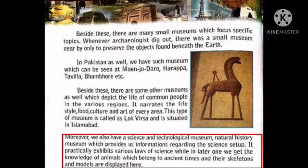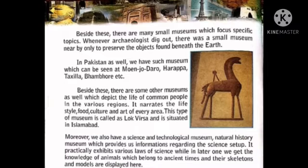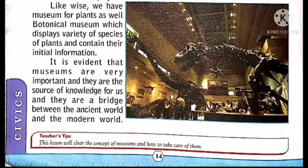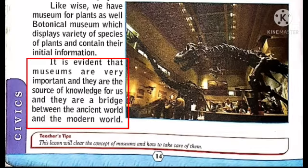The last paragraph is very important — underline the whole paragraph and learn it. Likewise, we have a museum for plants as well: the Botanical Museum, which displays a variety of species of plants and contains information about them. It is evident that museums are very important; they are a source of knowledge for us and a bridge between the ancient world and the modern world.